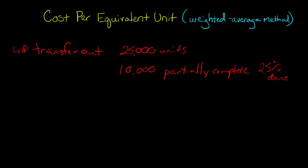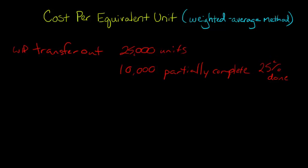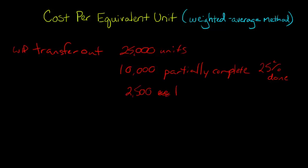So what we could say is, okay, we've got something in our WIP account. Even though these aren't finished, they're a quarter of the way through. So we take that 25% and multiply it by the 10,000, and that tells us we have 2,500 Equivalent Units — basically 10,000 times 25% — so we've got 2,500 Equivalent Units in the WIP account at the end.